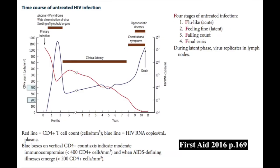Looking at the time course of HIV infection, there are four stages — called the four F's: flu-like (the acute stage), feeling fine (the latent stage), falling count, and final crisis. In the acute phase, stage one, we have flu-like symptoms — fever, malaise, and typical viral prodromal symptoms.